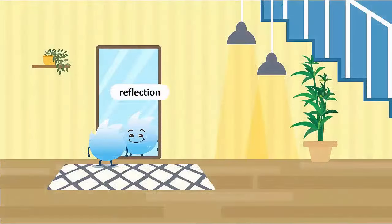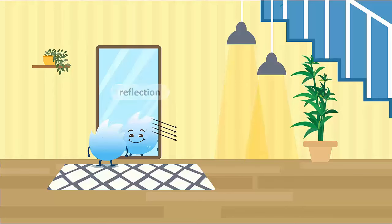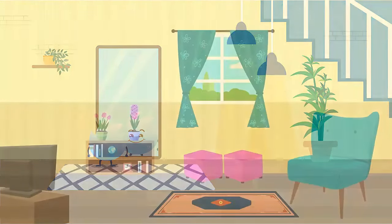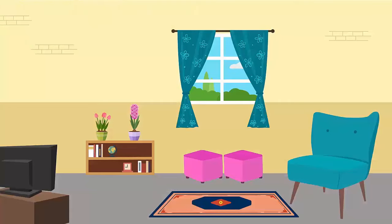We see our reflection in mirrors and various other surfaces due to the regular reflection of light. Usually, sunlight does not reach our rooms directly, but we still can see objects around.